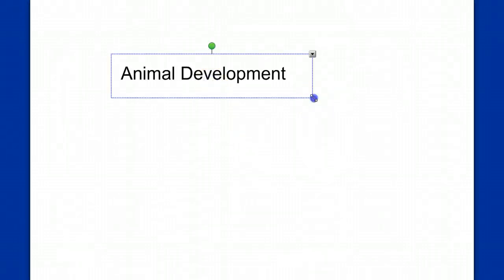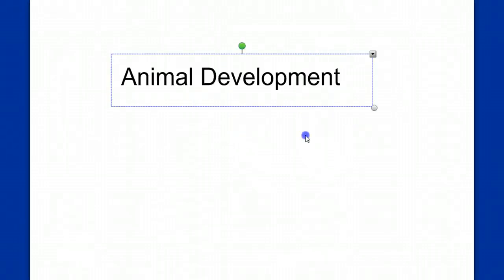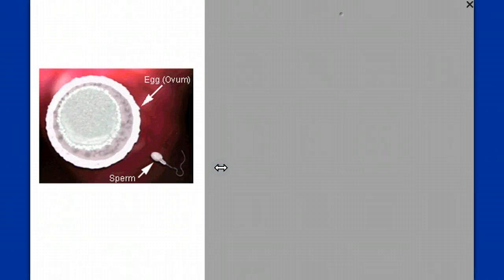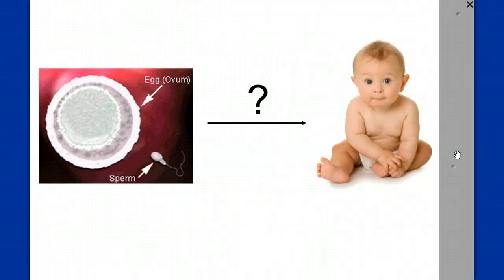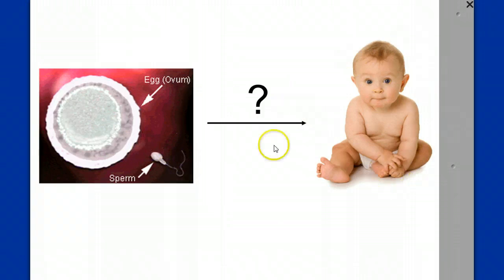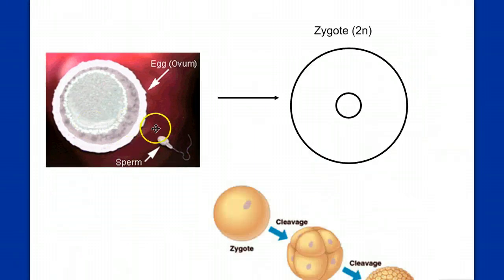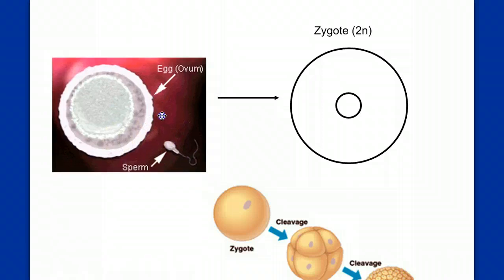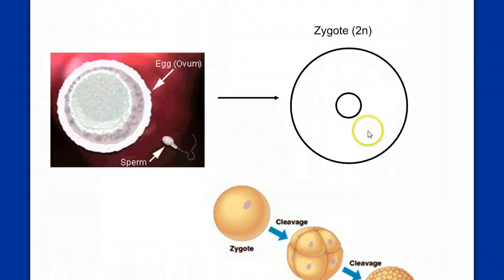In this video on animal development, we're going to figure out how we go from two cells that are haploid to a fully functional organism with all of its many differentiated cells and organs. The first step is to get from the gametes to our first cell, the zygote.